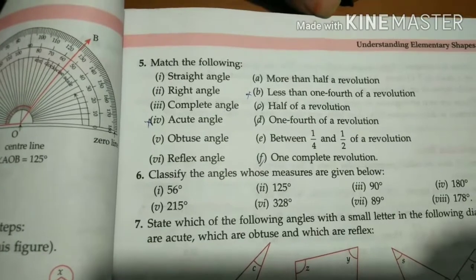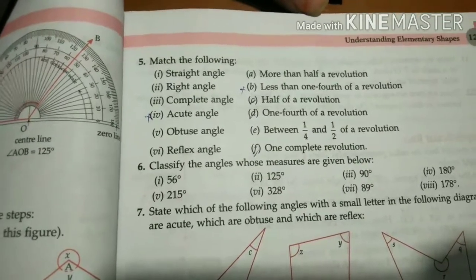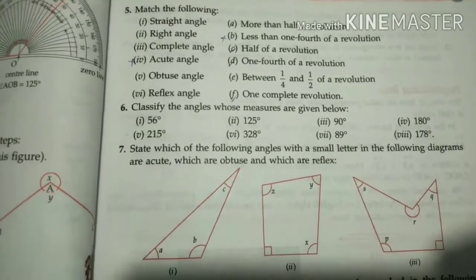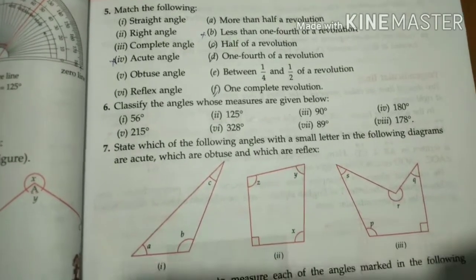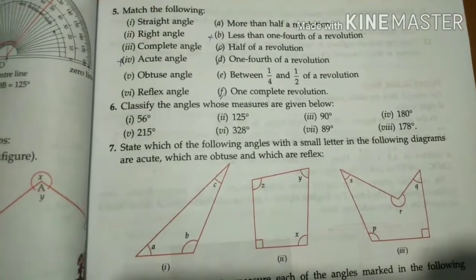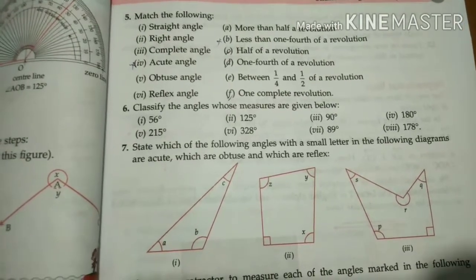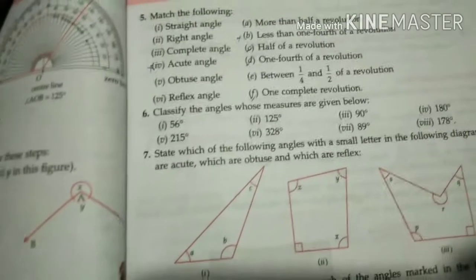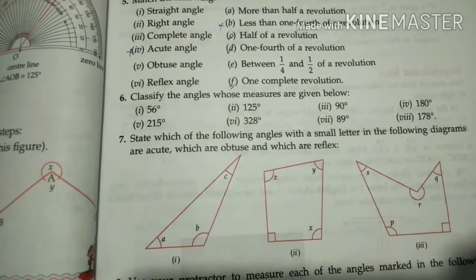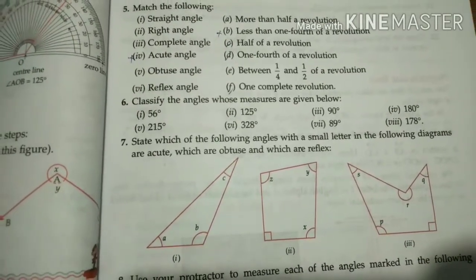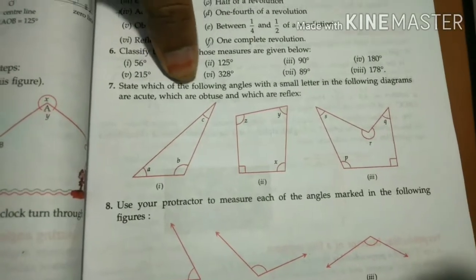Question number 5 is matching. Question number 6: classify the angles whose measures are given below. You need to know right angle, obtuse angle, reflex angle, straight angle. If we recall: less than 90 is acute, exactly 90 is right, more than 90 is obtuse, exactly 180 is straight, and more than 180 is reflex angle.